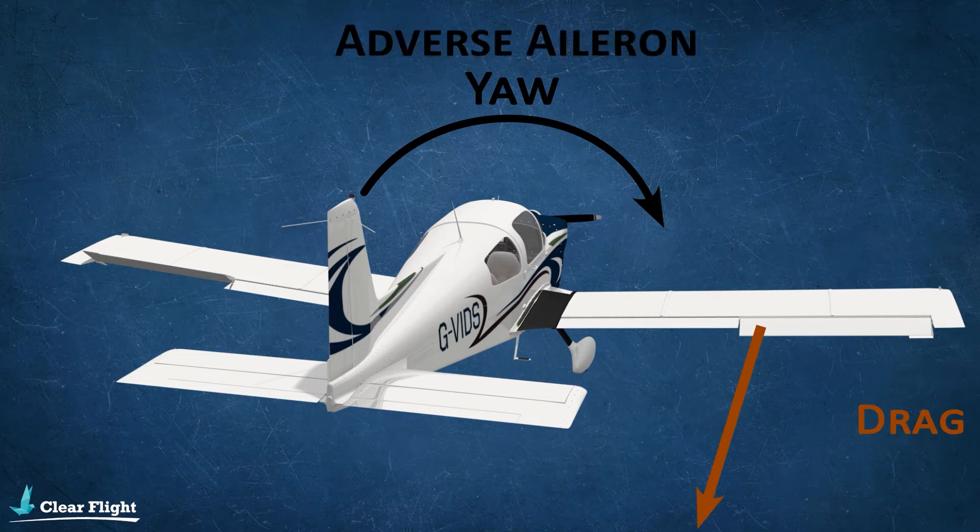To prevent this adverse aileron yaw, the pilot must apply appropriate rudder in the same direction as the roll. A properly coordinated entry into a turn should involve only roll, and any yaw should be prevented by the pilot through use of the rudder.